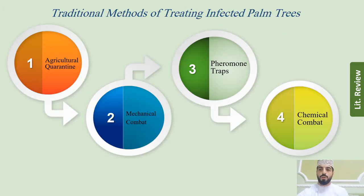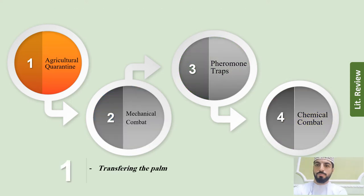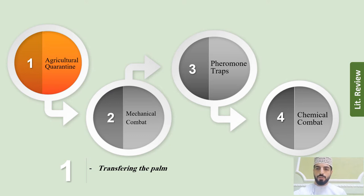What are the methods for treating infected palm trees? We have agricultural quarantine, mechanical combat, pheromone trap, and chemical combat. In agricultural quarantine, they transfer the palm from an infected area to a new area, which means we cannot stop the spread of the red palm weevil.